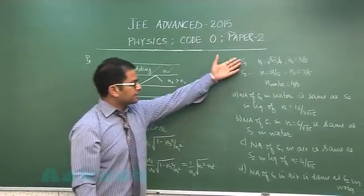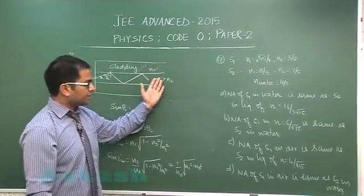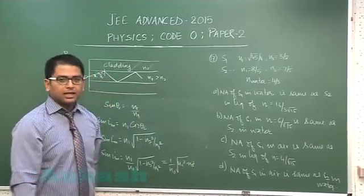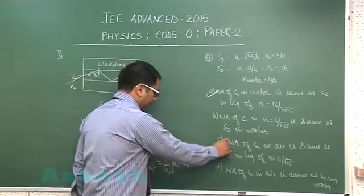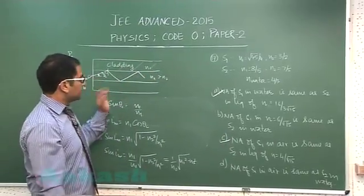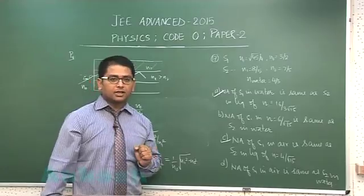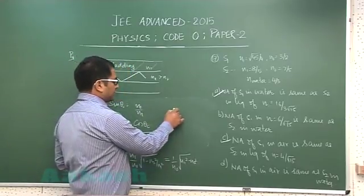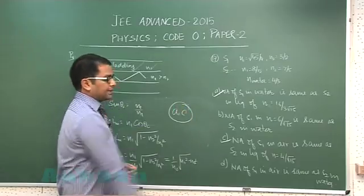Substituting the values for systems S1 and S2 into the derived formula, and evaluating for each given medium (water and liquid of specified refractive index), the correct options for question 17 are A and C.